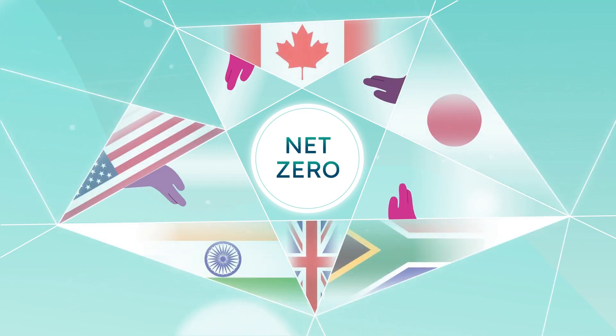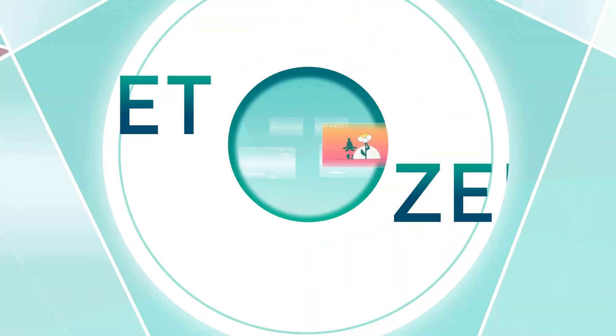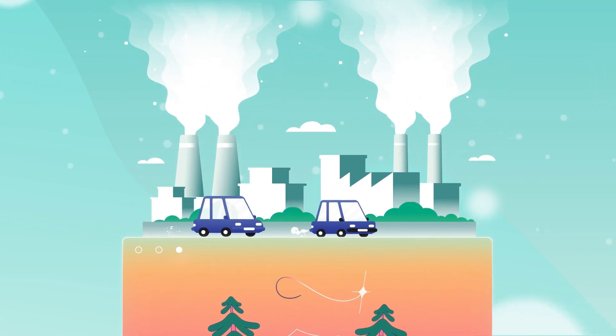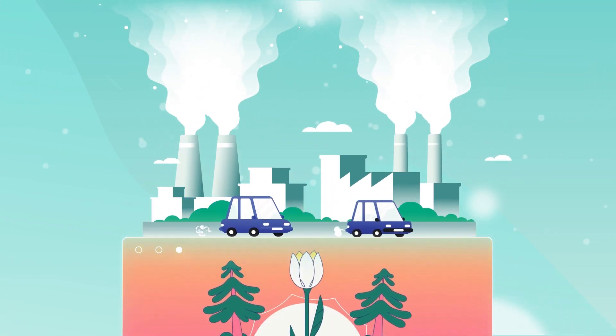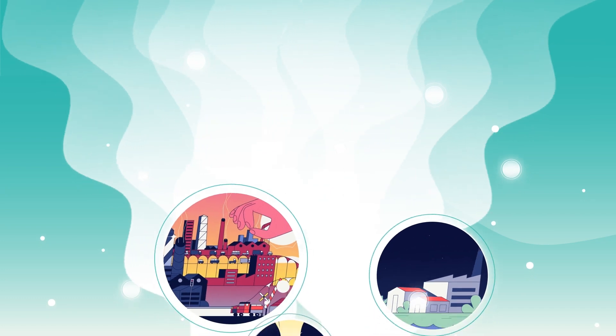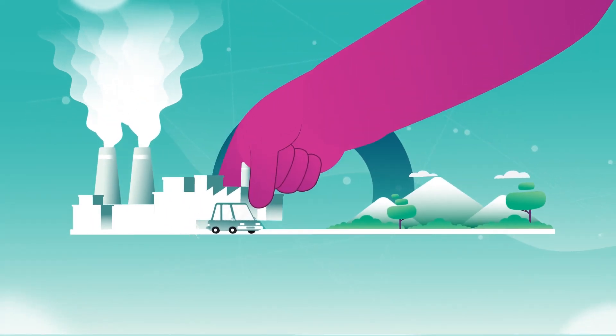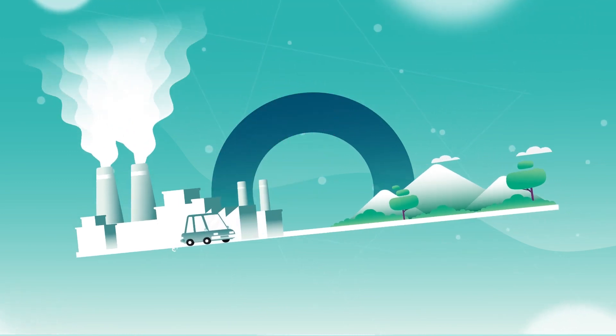Where does all the carbon go? This video brilliantly shows where all the emitted carbon goes. This video uses beautiful visuals and symbolism to show how human activity is throwing the delicate balance of nature out of whack.